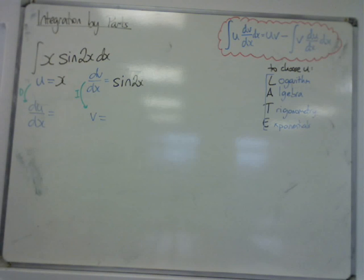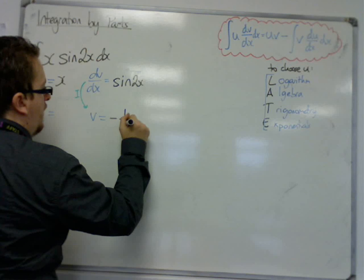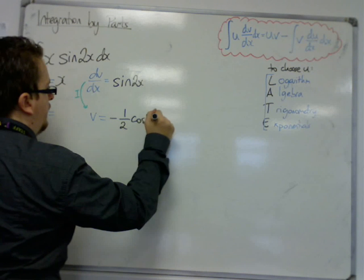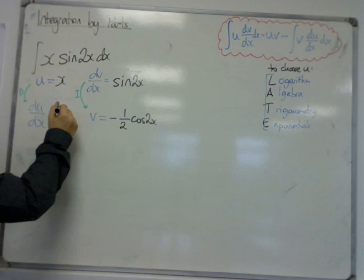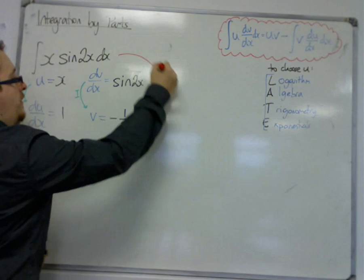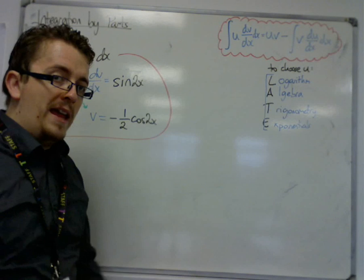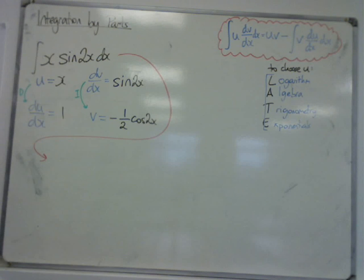So then we integrate sin 2x, which is minus 1/2 cos 2x, and we differentiate x to get 1. Make sure you're happy with this because this is a very easy, straightforward integral that you need to be aware of and able to do very easily.